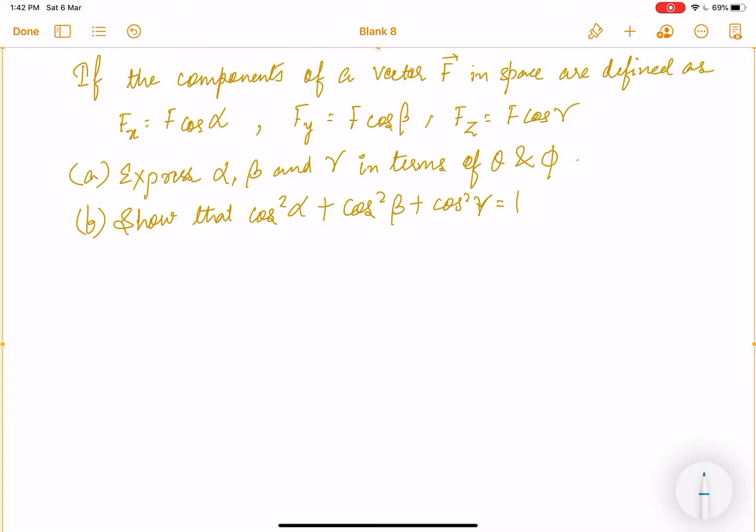See, basically it's a vector, it's a normal vector that's given and we have been told what are the components along x direction, y direction, and z direction. In all these three directions, we know the values of the vectors. Like this is f_x in this direction, this is f_y, this is f_z.